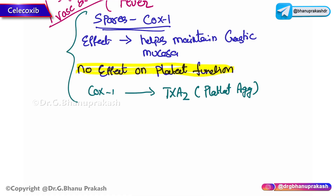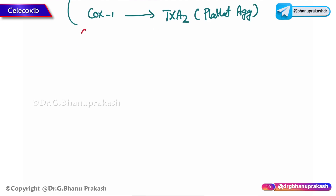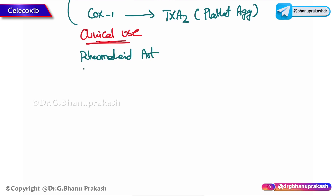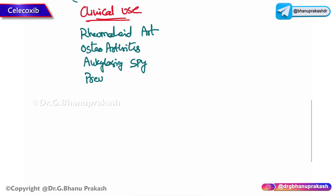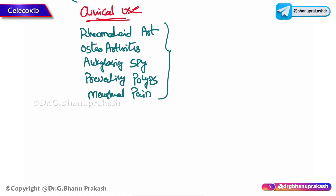In what conditions is Celecoxib mainly used? The clinical uses include rheumatoid arthritis, osteoarthritis, and ankylosing spondylitis. It can also be used in preventing polyps and sometimes for menstrual pain as well.